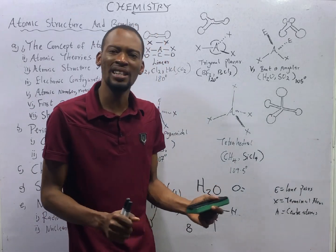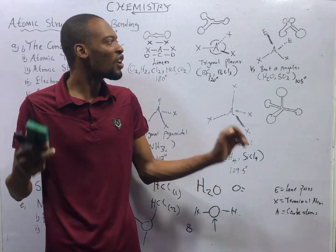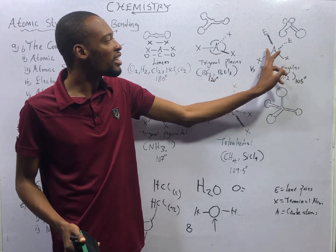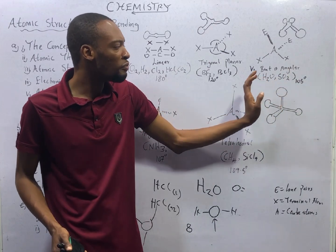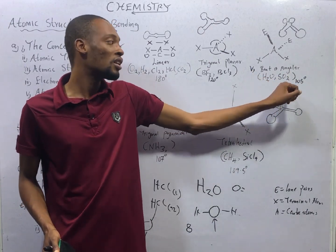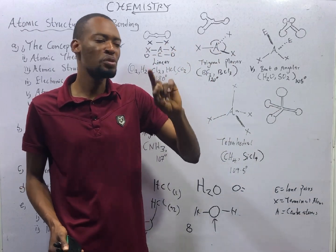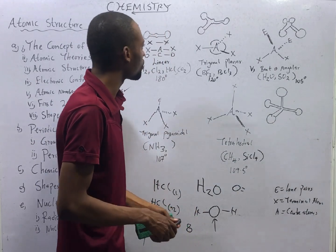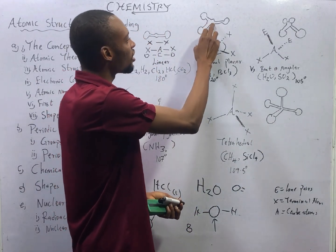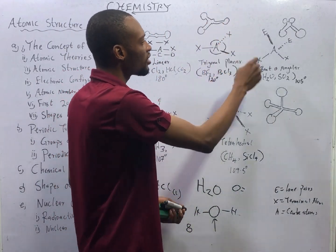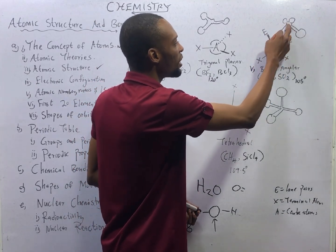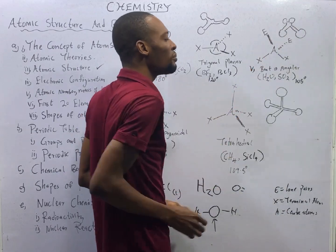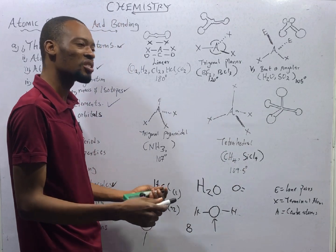Molecules can be bent, angular, or V-shaped — they all represent the same thing. This is a bent molecule: A in the centre, S and S around it. Examples of bent molecules are H2O and SO2, and the bond angle in bent molecules is 105 degrees. In terms of structure, you see one central atom, one terminal atom on each side, and two lone pairs (E and E) around the central atom — they are not bonding pairs, they are just lone pairs.